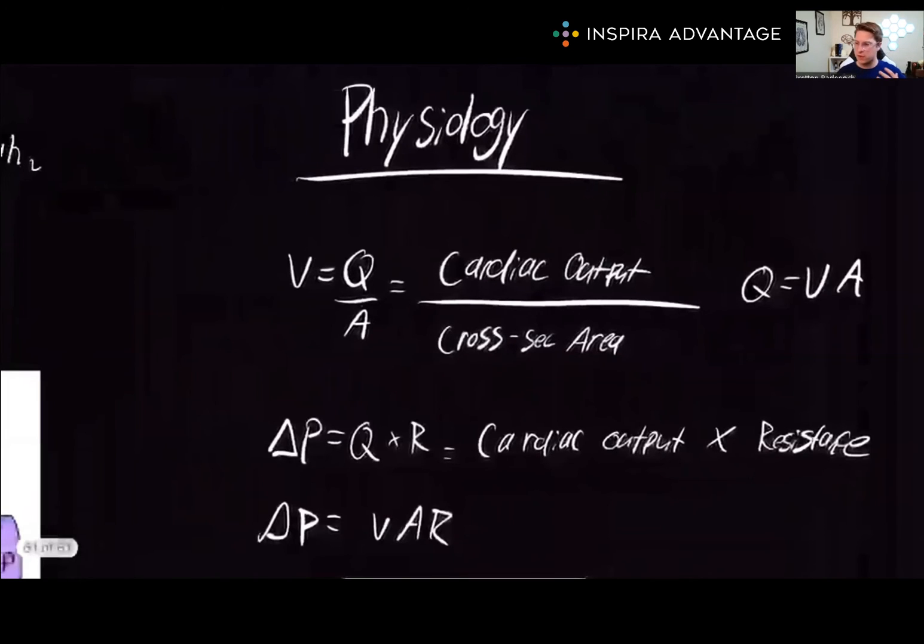Now for the cool part, because people are always complaining on the MCAT: physics, how does it relate to being a doctor? Well, here it is. Time for some physiology. Our circulatory system is a closed system with non-constant flow. Sound familiar? Think about your pulse. The equation ΔP equals cardiac output times resistance tells us that the change in pressure equals cardiac output times resistance. So the larger the cross-sectional area of our blood vessels, the less resistance there is, leading to slower blood velocity.